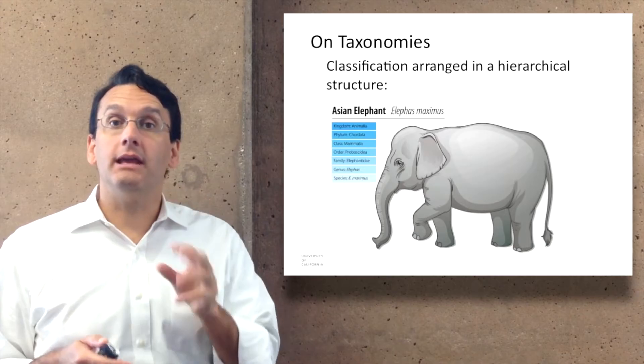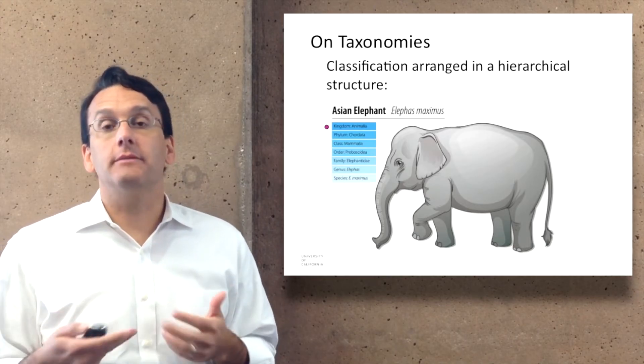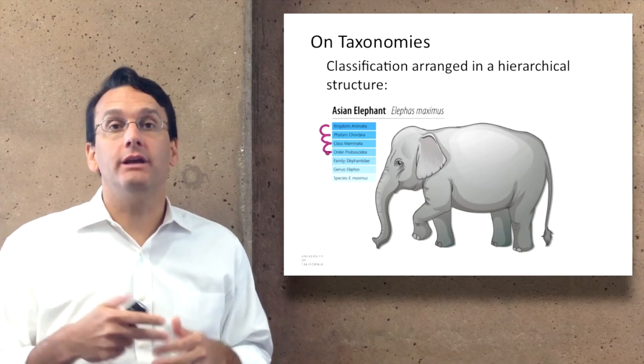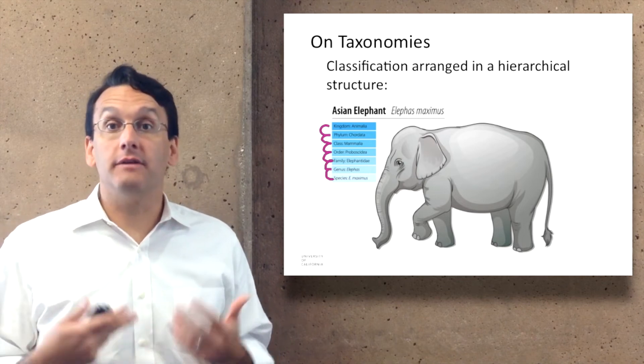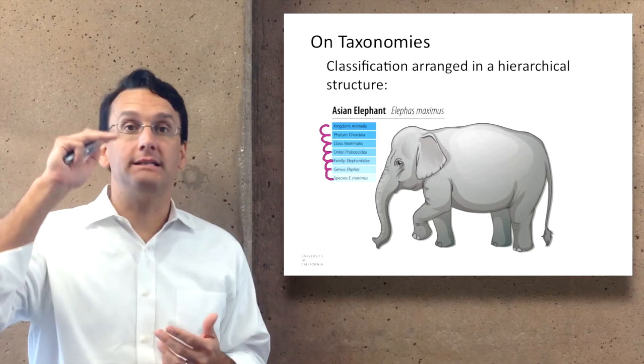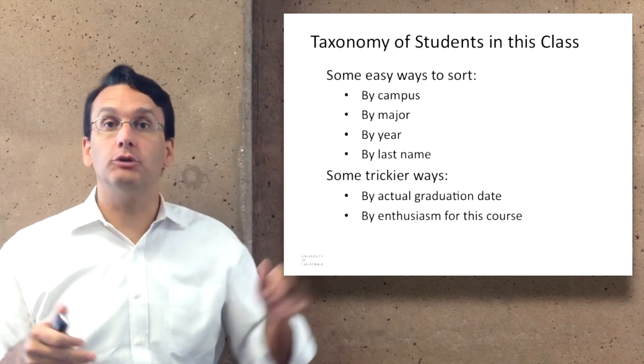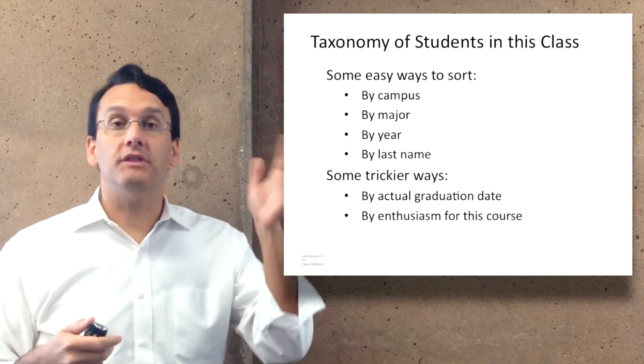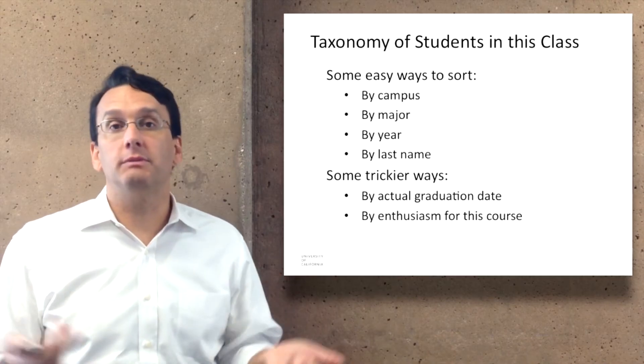Another point that's very relevant to a lot of the ways we'll be thinking about in this class is the idea of a taxonomy. A taxonomy is a classification structure that is arranged in a hierarchy. For example, if we were going to have a taxonomy of the students in this class, there are a variety of ways you could sort them. You could start off by saying we're going to take the different campuses, and then within that split students out by major, and then within that by the year, and then split them out alphabetically by their last name.